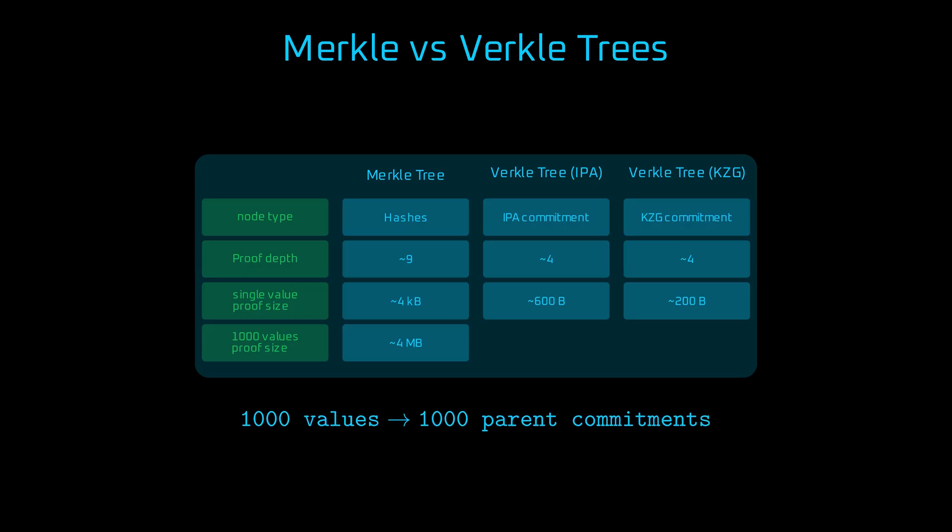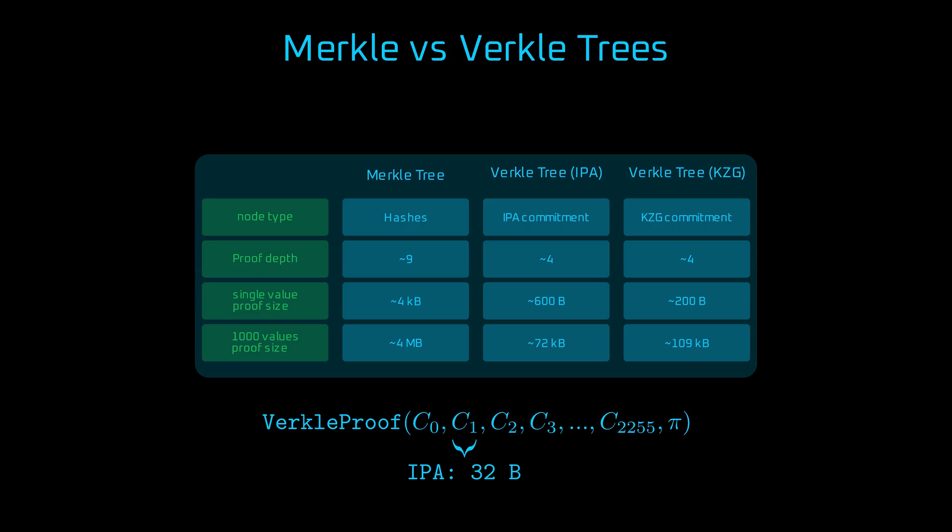In a four-level verkle tree, the worst-case proof is where each of the 1,000 keys follows a separate path. Thanks to smaller 32-byte commitments compared to 48 bytes in KZG, the total proof size with IPA stays lower, around 72 kilobytes versus 109 kilobytes for KZG. Even though the IPA multiproof is larger, around 512 bytes, that overhead becomes negligible in large batch proofs.